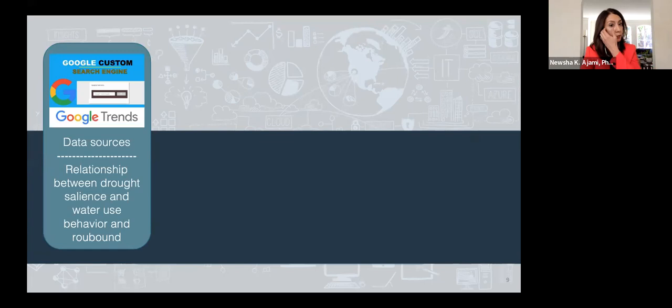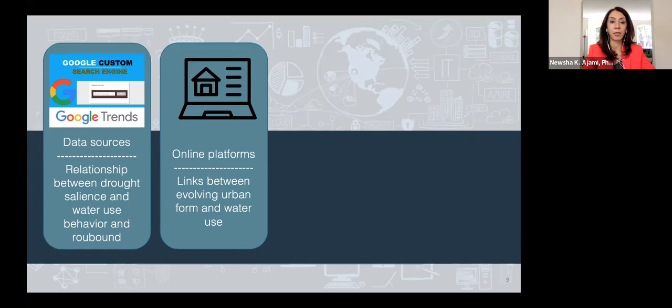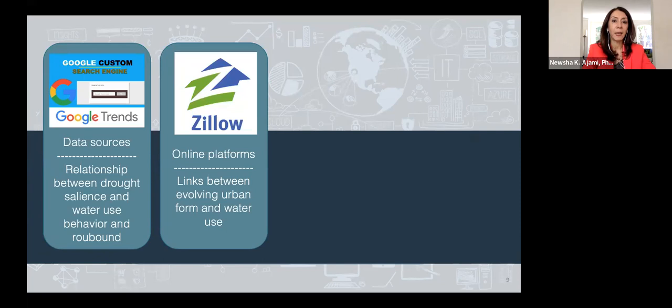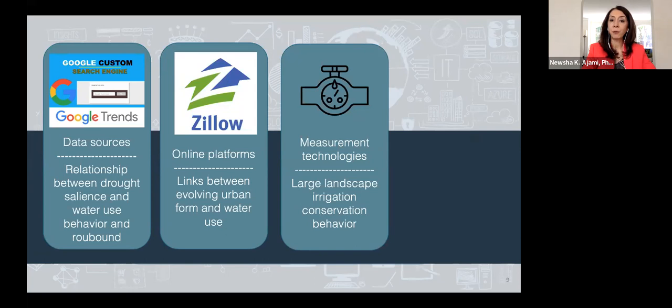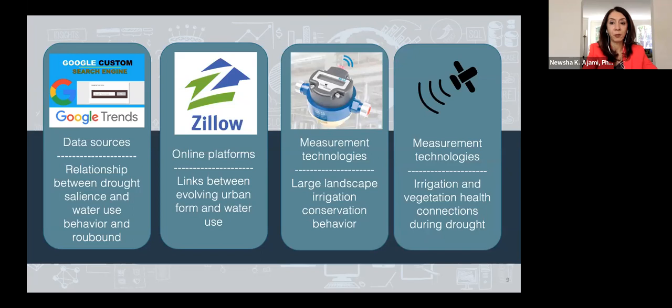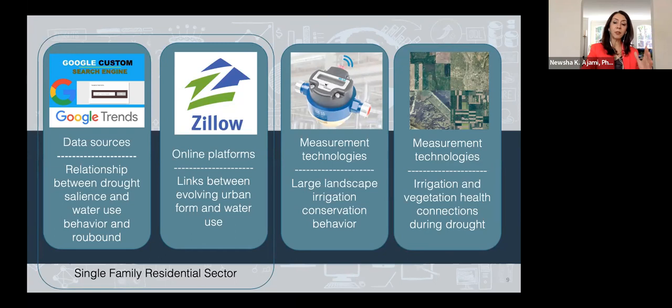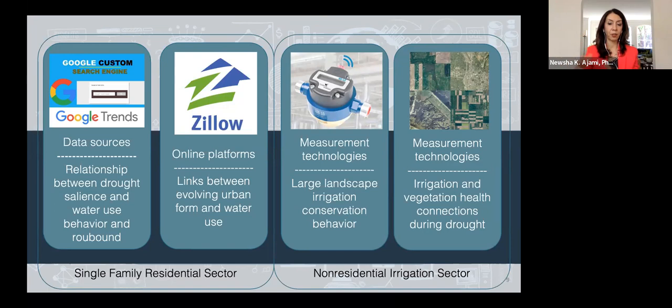I'm going to focus on four different studies. The first looks at the relationship between drought salience and water use behavior and rebound. The second focuses on online platforms like Zillow and Redfin, which are data aggregators. The third focuses on measurement technologies such as water meters. The last focuses on using satellite data to better inform irrigation patterns. The first two focus on single-family residentials; the second two focus on the non-residential irrigation sector, which uses almost 50% of our water outdoors.